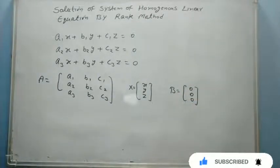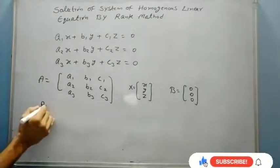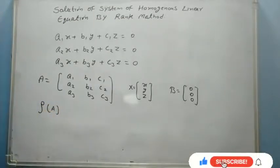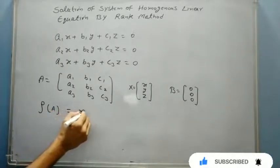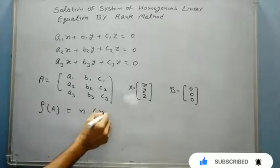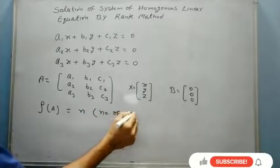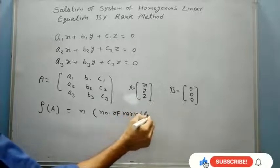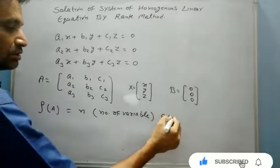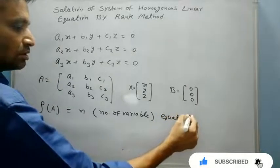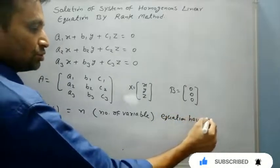To solve homogeneous equations, we will first find the rank of A. If rank of A equals n, as you know n is nothing but the number of variables, then we say the equation has a unique solution.